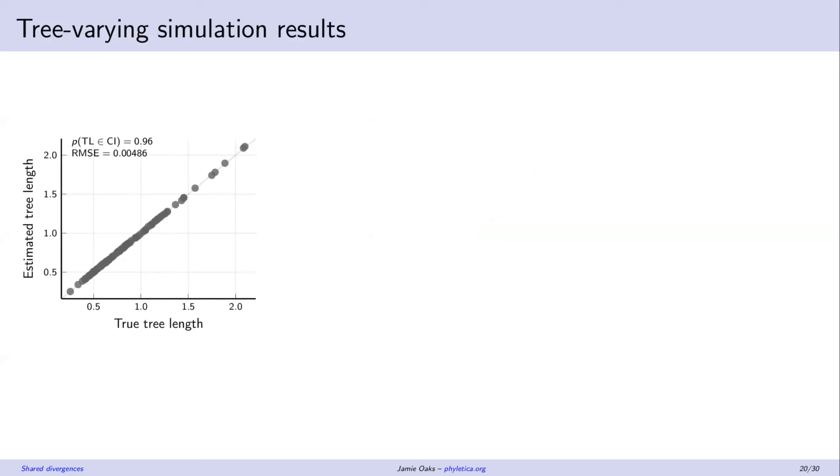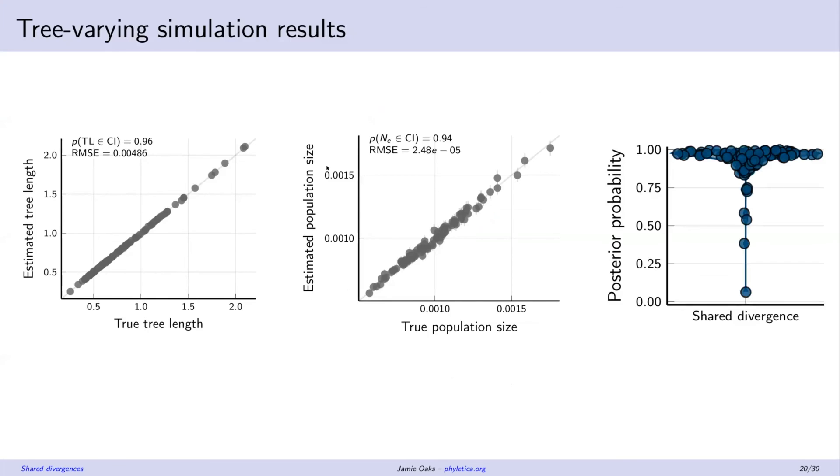Okay, so when we allow the tree and the branch lengths to vary in the simulations, we're doing a really good job of estimating the true tree length and the true population size and we're getting our expected coverage. So we're covering the 95% confidence intervals covering the truth 95% of the time. That's great, good sanity check there that things are working. And whenever there is a true shared divergence time we're getting quite high posterior probabilities for those events. So the good behavior is not restricted to just those trees that I chose to simulate data on.